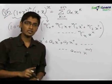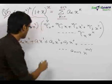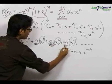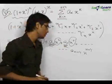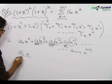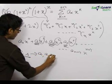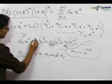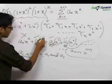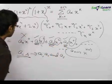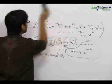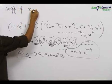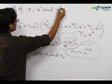Now, it is given that a1, a2, and a3 are the coefficients of x¹, x², and x³ respectively, and these three are consecutive terms of an AP. So we only need to care about a1, a2, and a3 — that is, the coefficients of x, x², and x³ in the LHS of our expression.